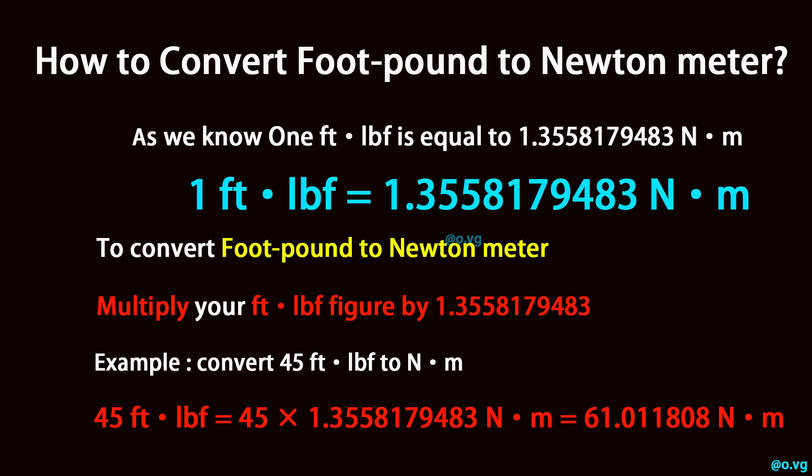Example: convert 45 foot-pound to newton-meter. 45 foot-pound is equal to 45 times 1.3558179483 newton-meter, which equals 61.011808 newton-meter.